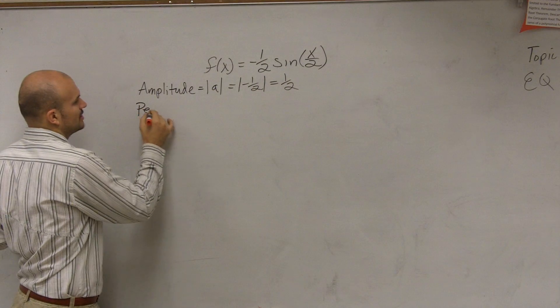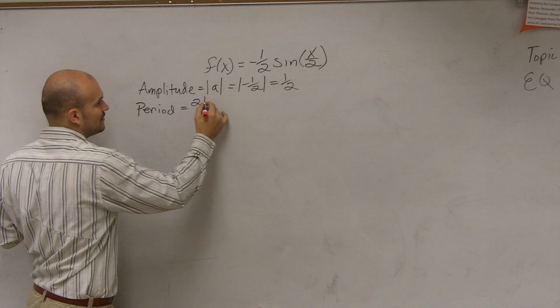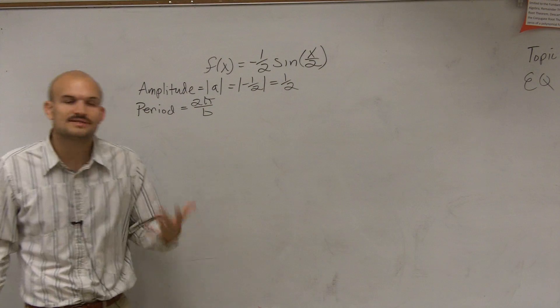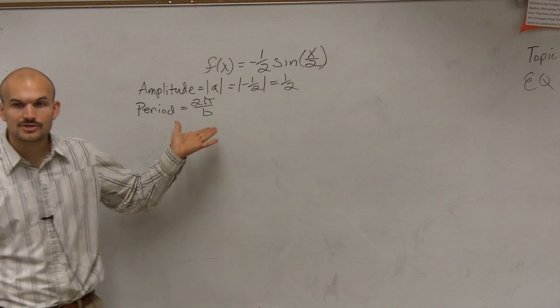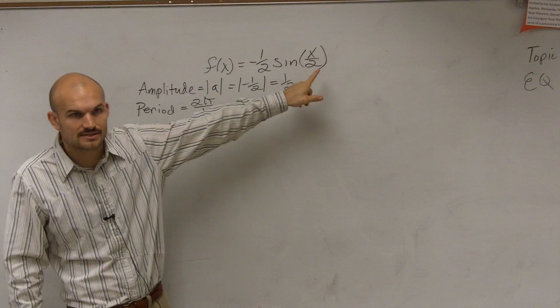The next is we like to look at the period. The period, if you remember, is 2π divided by b. This is the vocab you guys have to know for you guys to be able to graph. So the period is 2π divided by b. So we look at b. Remember, b is your coefficient of your x.